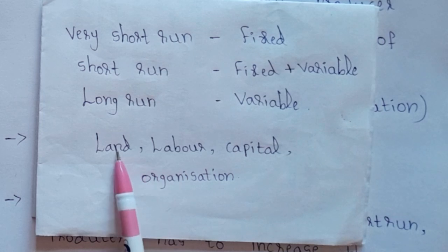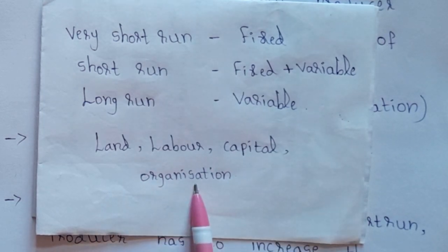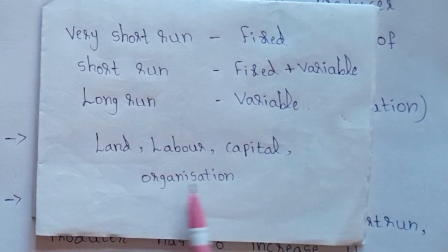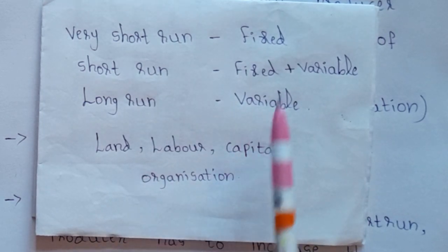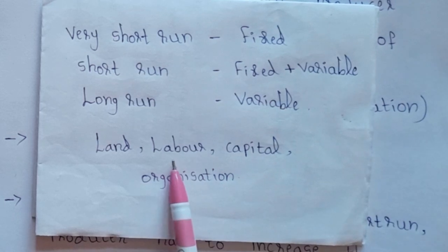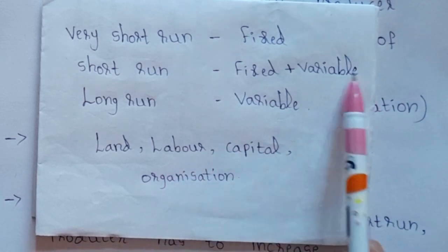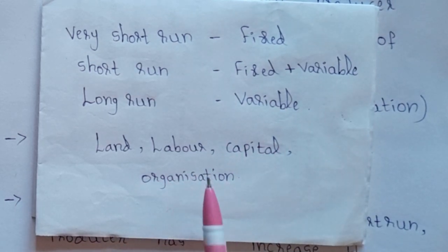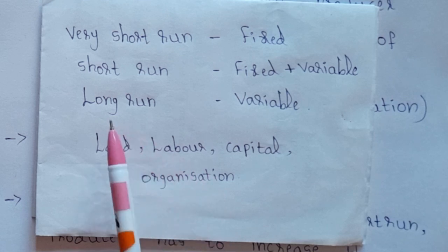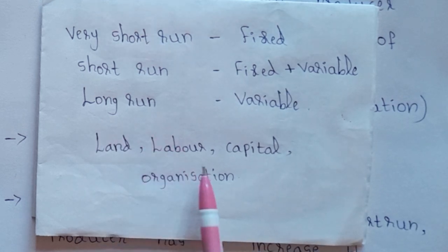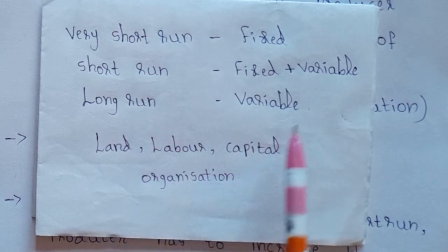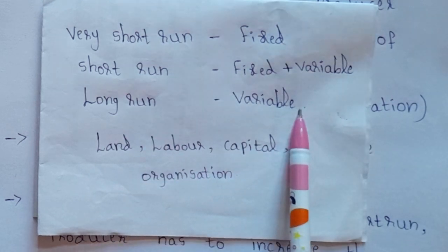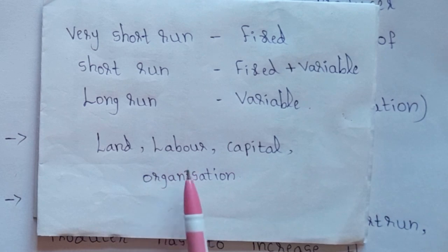In the short run, land, capital and organization are fixed factors, and labour is the variable factor which can increase. In the long run, all factors are variable.